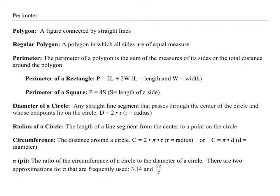Let's talk about different types of objects. The first one is a polygon and it's a figure connected by straight lines. So for example you can just draw whatever you want as long as it's connected by straight lines.